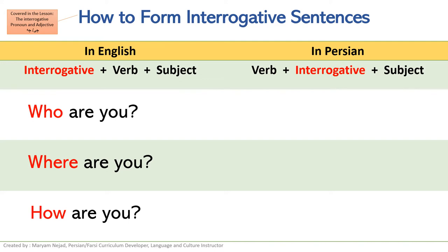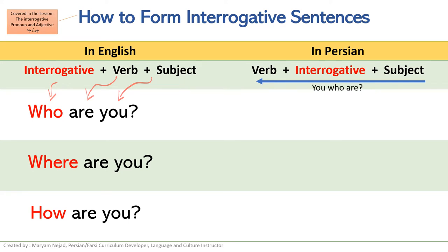How to form interrogative sentences — we have already covered this in another lesson, but let's go through it again. In English an interrogative sentence starts with the interrogative, then the verb, then the subject. But in Farsi we go from right to left, so first we start with the subject. For example: 'to key hasti' — meaning 'you who are' — and because the subject is a pronoun we don't necessarily need to say it, so we can just say 'key hasti'.